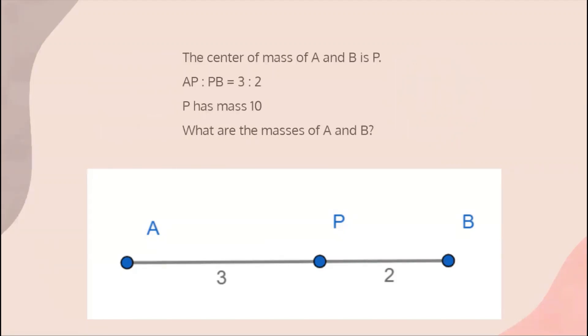So here's the solution. Well, in mass points, we can write the mass of a point right before the letter, so we can write 10P. Remember this notation because we'll use it again. We want the ratio of the masses of A to B to be 2 to 3